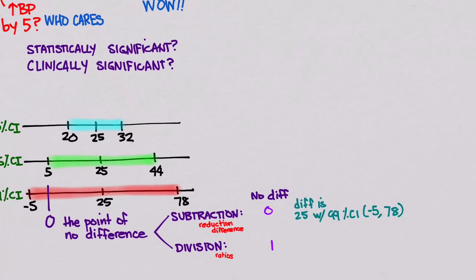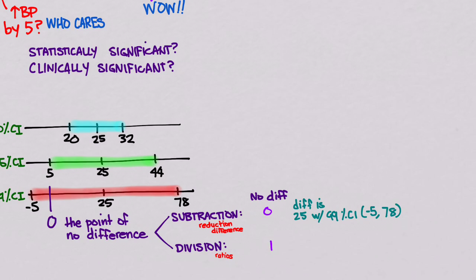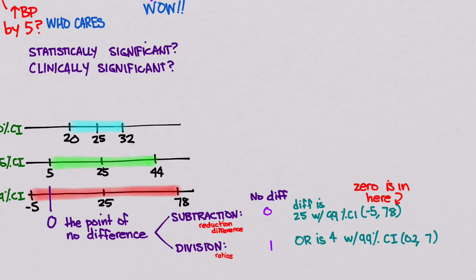If a parameter is a subtraction-type measure — say the difference is 25 with a 99% confidence interval of negative 5 to 78 — you look at the confidence interval and say that includes the point of no difference, so it is not statistically significant. Similarly, if you're looking at a ratio-type comparison — say an odds ratio of 4 with a 99% confidence interval of 0.2 to 7 — the point of no difference is included, so this is also not statistically significant.